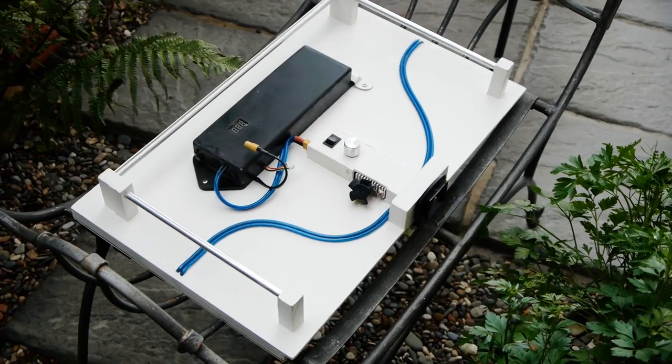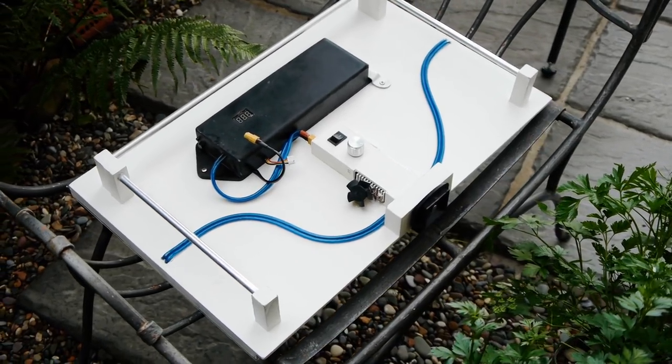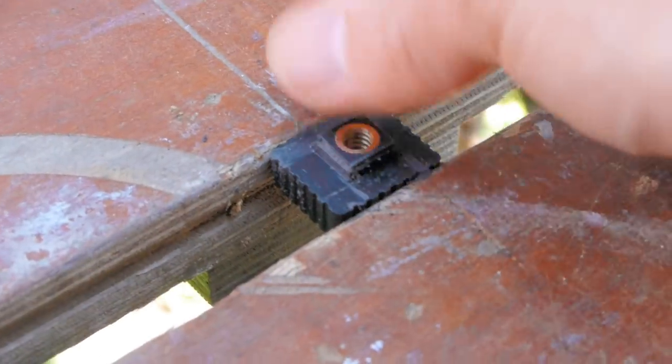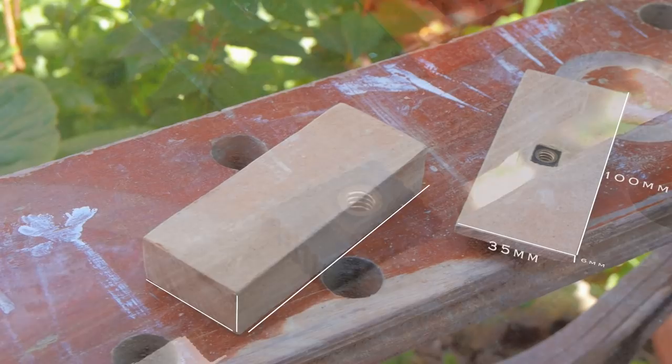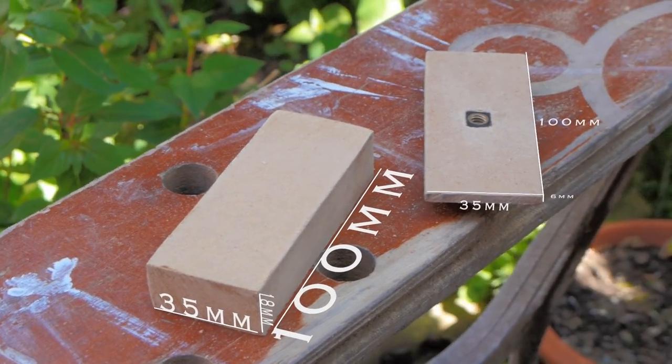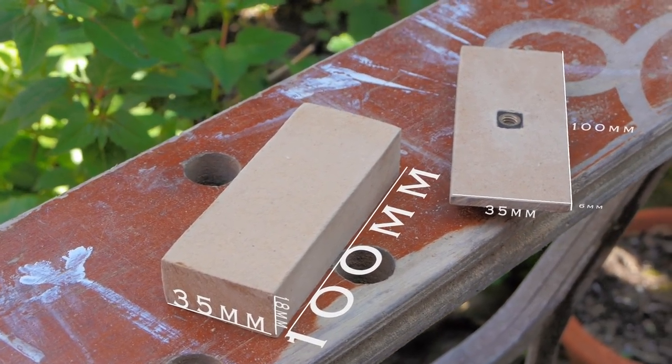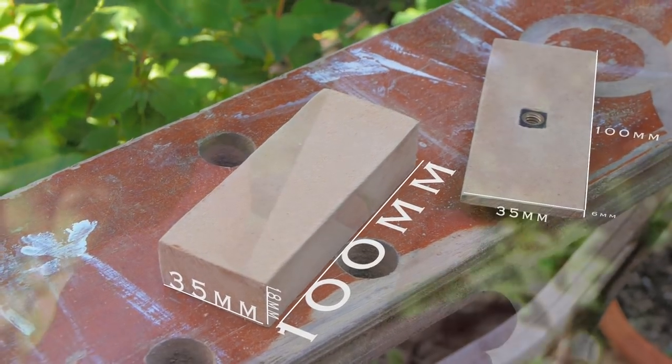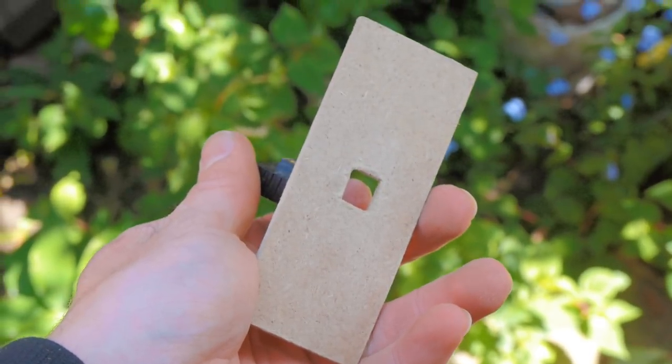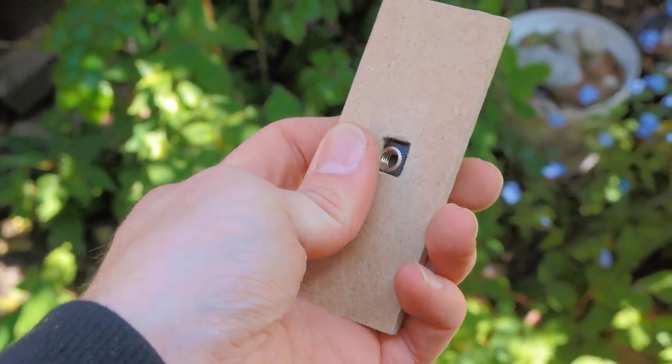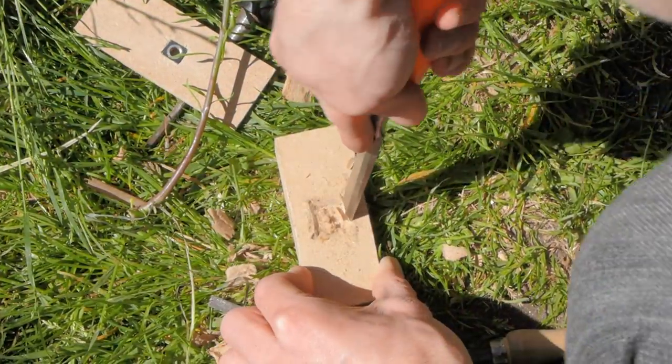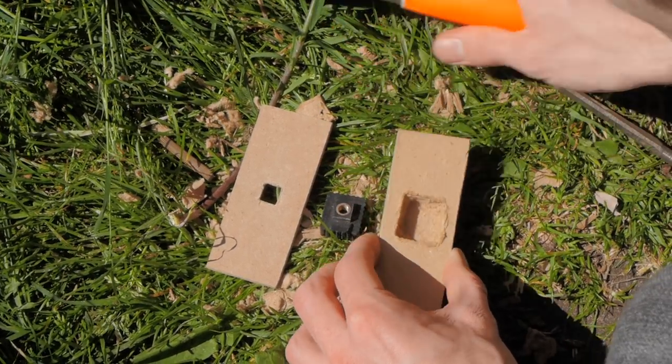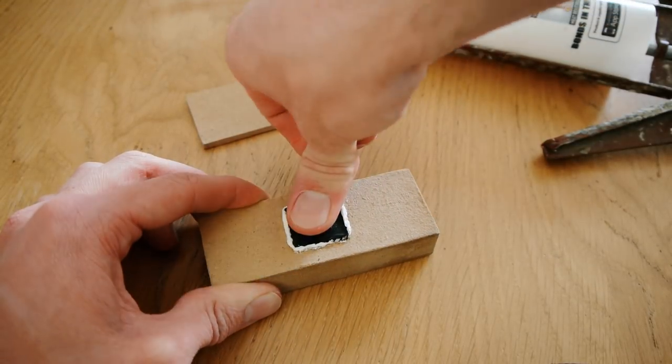The first thing to do is build the frame starting with the tripod mount. Get a camera shoe mount adapter and trim off the excess plastic around the thread on the bottom using a hacksaw. Next, cut out two 35 by 100mm rectangles, one out of 6mm MDF and the other out of 18mm MDF. Drill a hole in the centre of the thinner rectangle for the trimmed shoe adapter to fit through. Next, use a chisel to dig out a hole in the thicker rectangle for the shoe adapter to fit into. Use some glue to stick it all together.